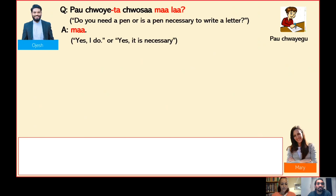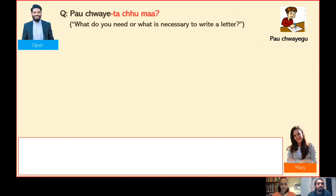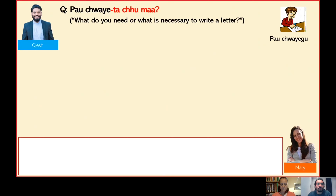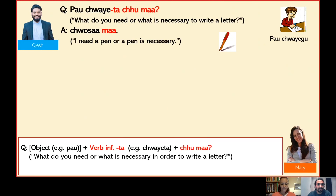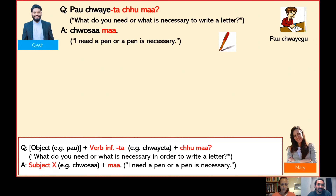We have just confirmed that in order to write a letter you need a pen. But suppose that I don't know what is necessary or what you need in order to perform this action. In this case I can ask: po jueta chuma — 'What is necessary to write a letter?' or 'What do you need to write a letter?' You can answer: chua sama — 'A pen is necessary' or 'I need a pen'. Odesh, could you please explain the structure of these sentences? Sure. The structure of the question is: object, in this case po, plus verb infinitive followed by suffix ta, plus tu — the question word meaning 'what' — plus ma.